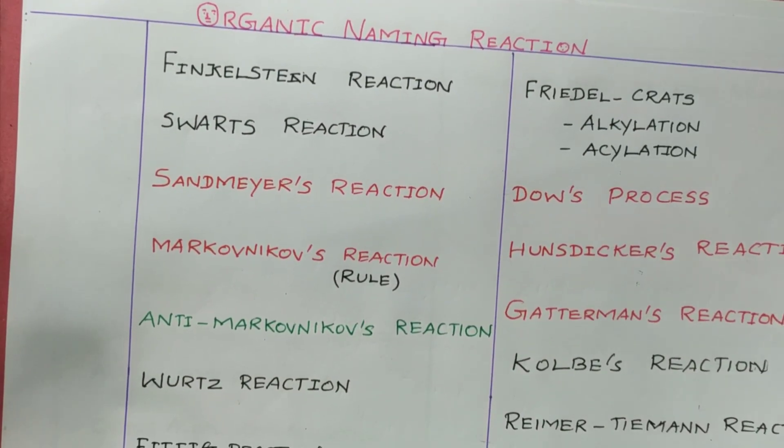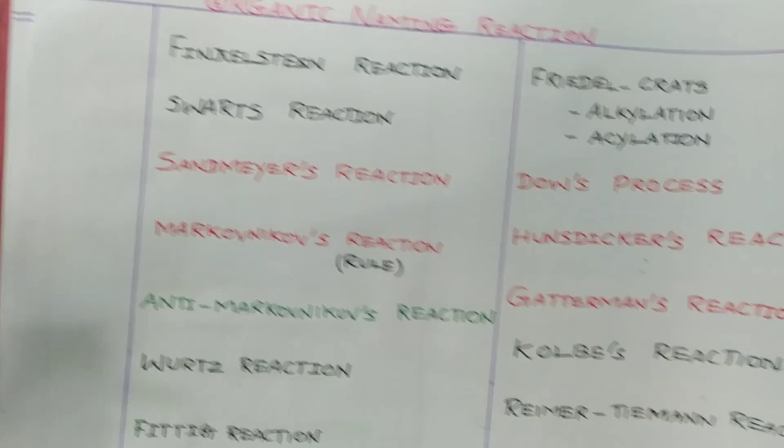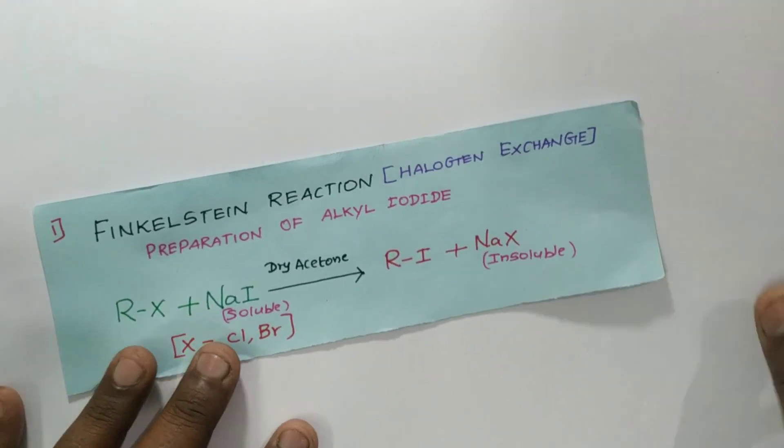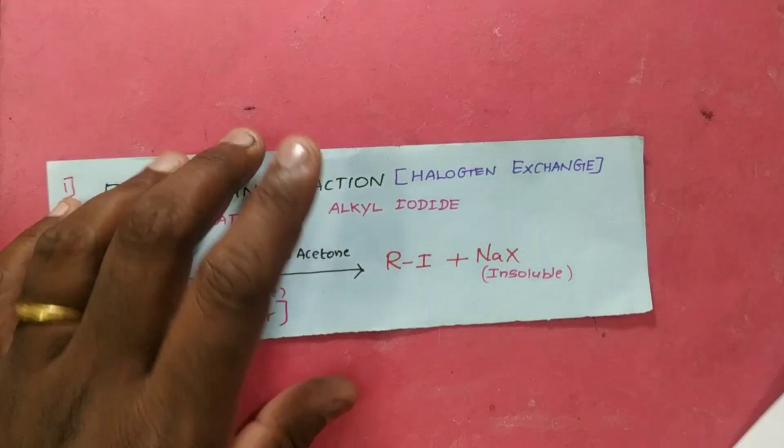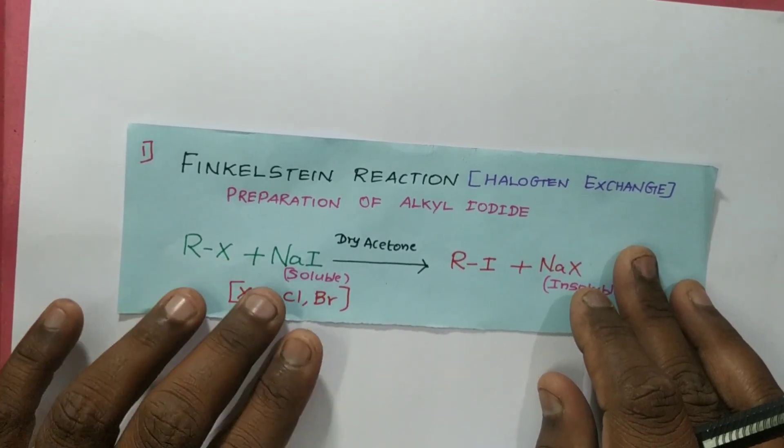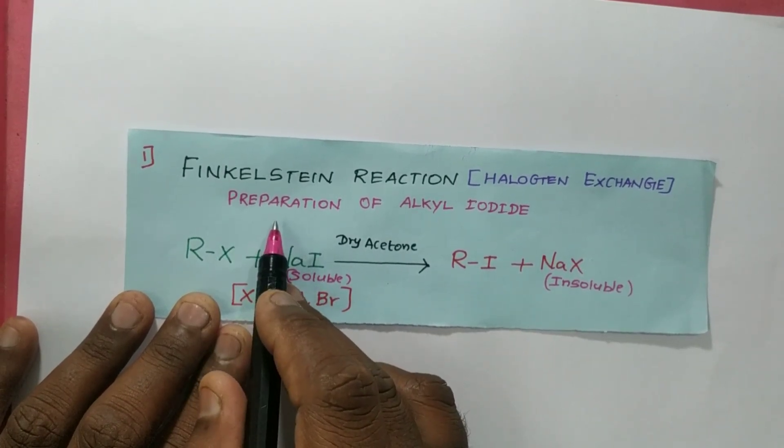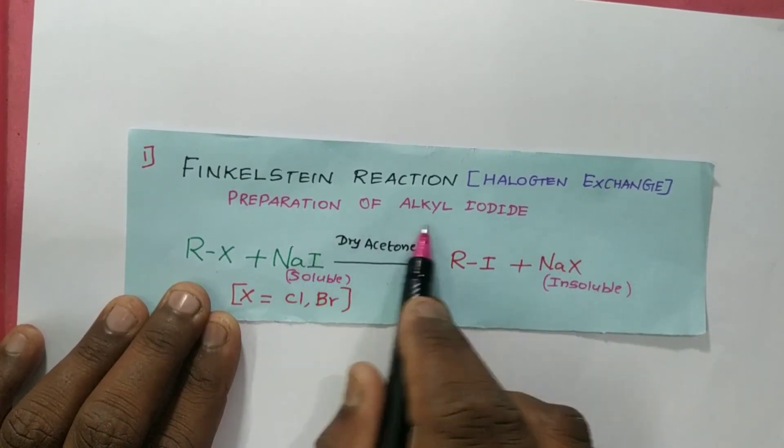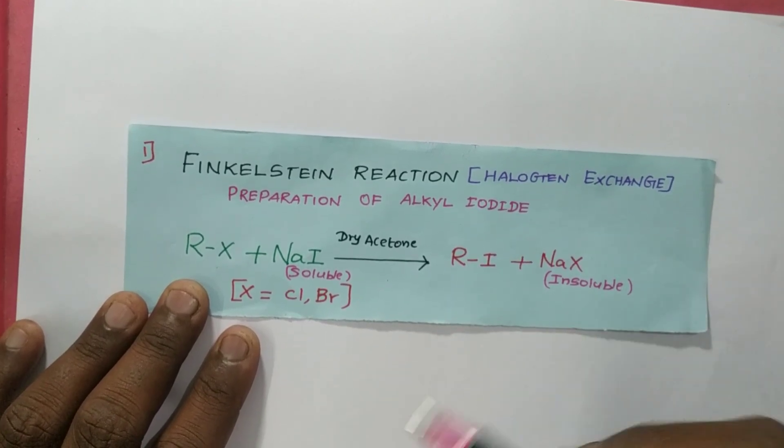The first thing is the Finkelstein reaction. What is Finkelstein reaction? It is a very simple halogen exchange reaction. Both halogens are going to exchange using this reaction. Particularly, it is used for the preparation of alkyl iodide because of the solubility.